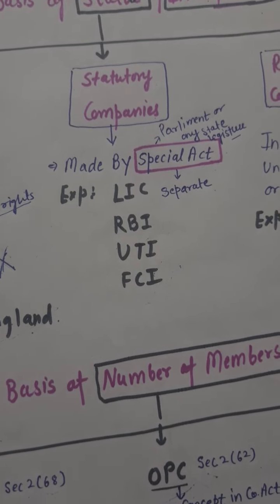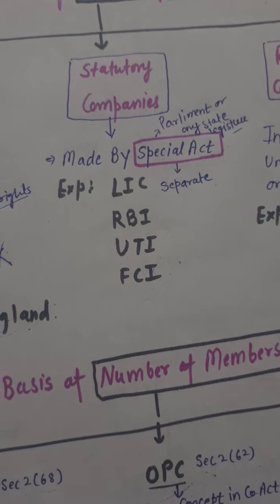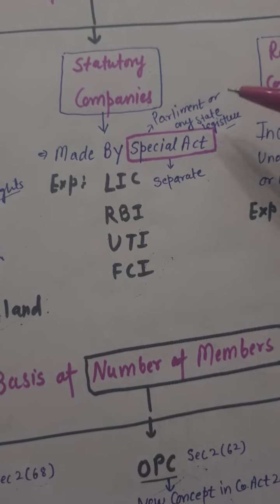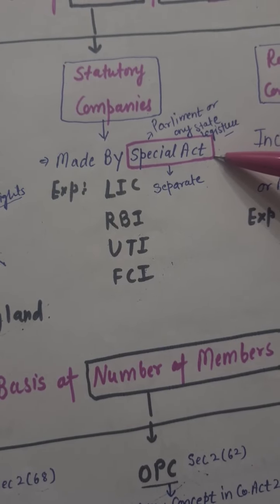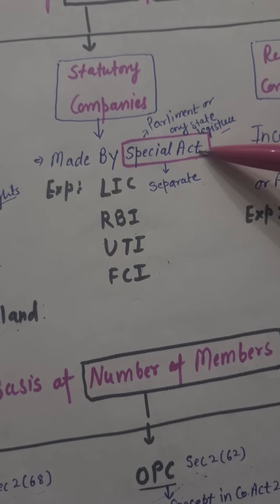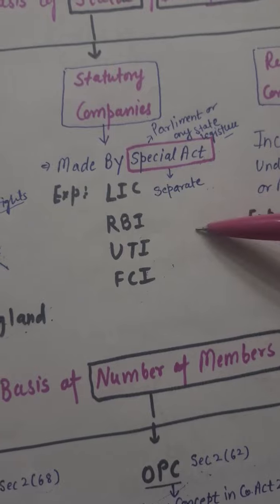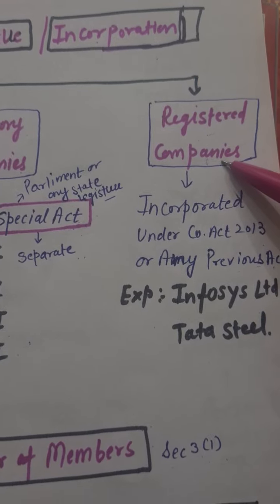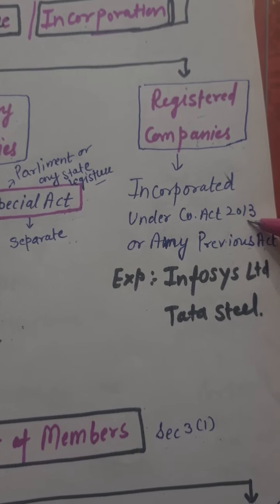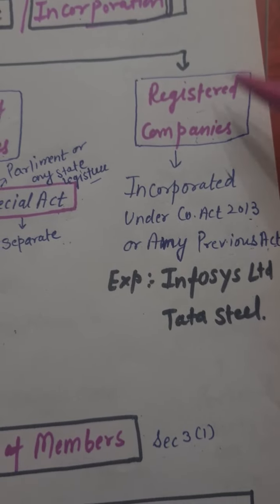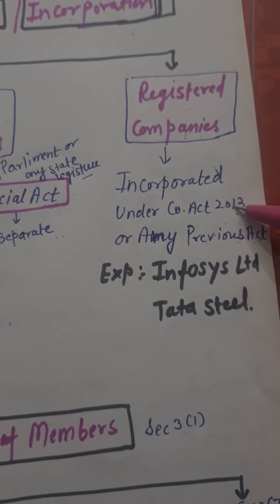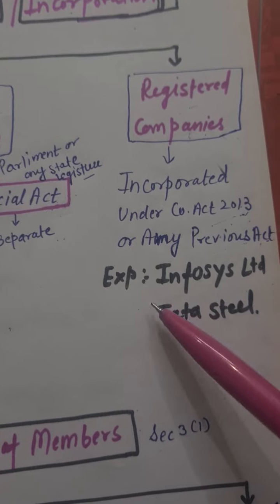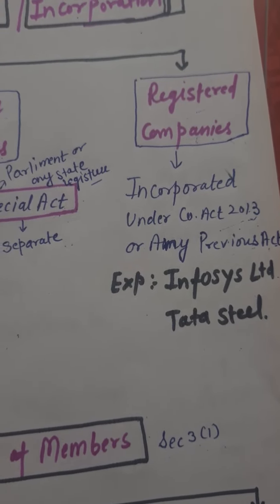If we have to make any changes in a statutory company, we have to change the Special Act itself, unlike a regular company where we change the Memorandum of Association or AOA. Next, registered companies are incorporated under the Companies Act 2013 and any previous Act, like 1956. For example, Infosys Limited and Tata Steel Limited.